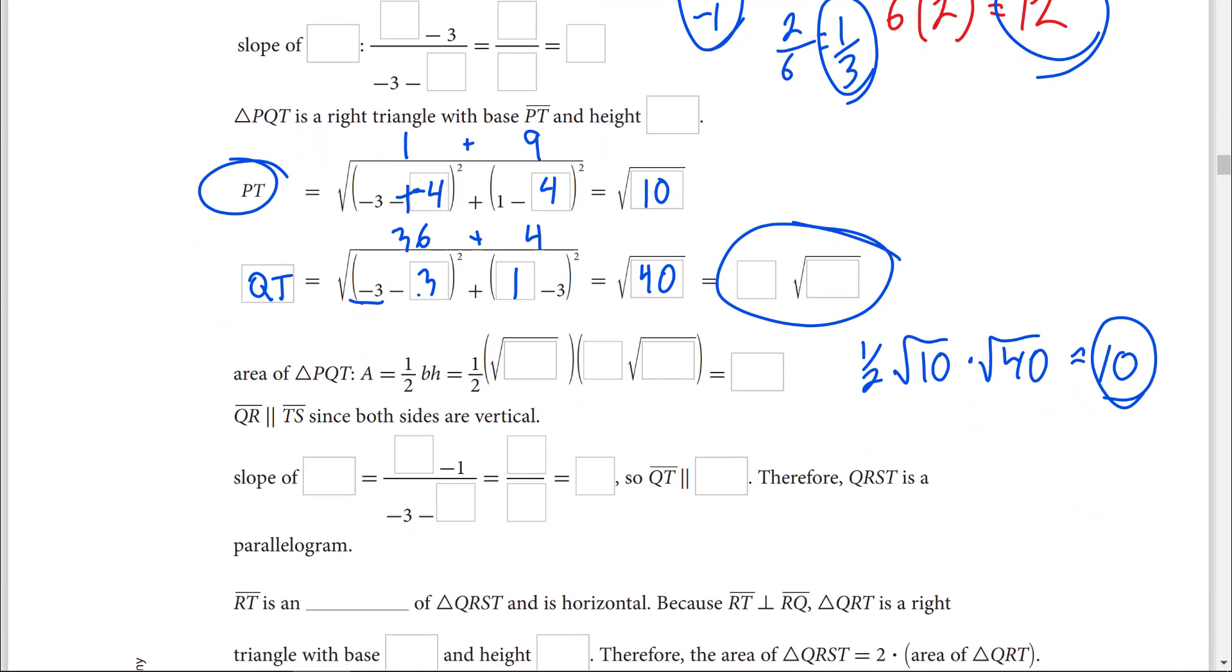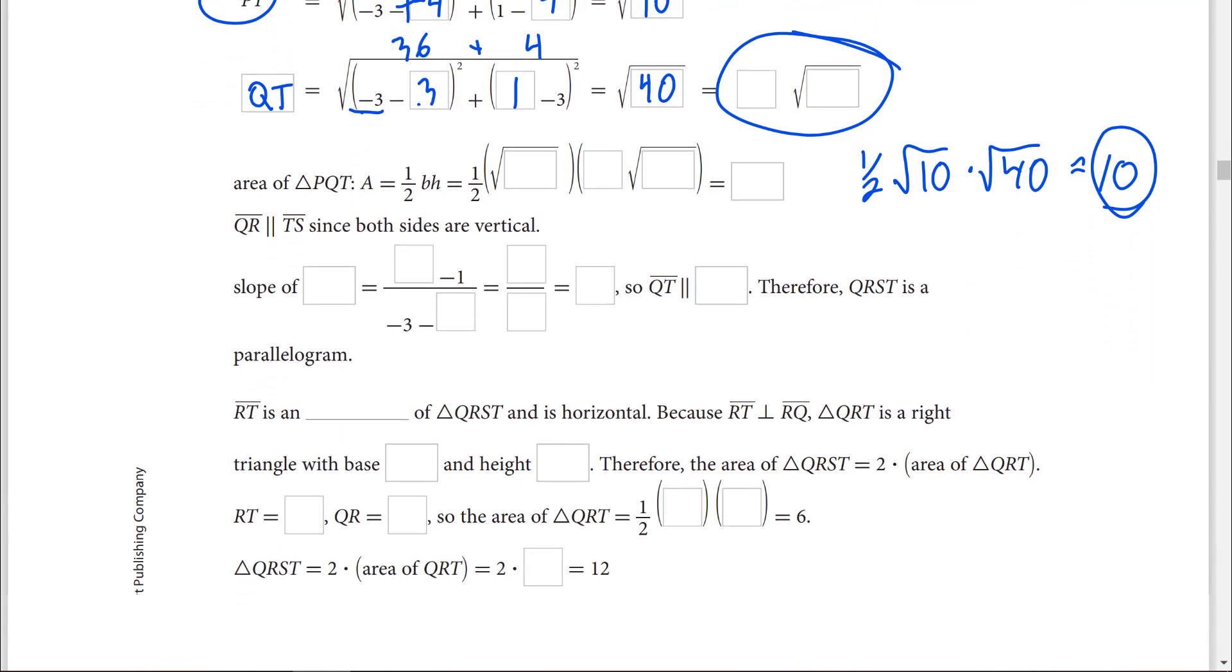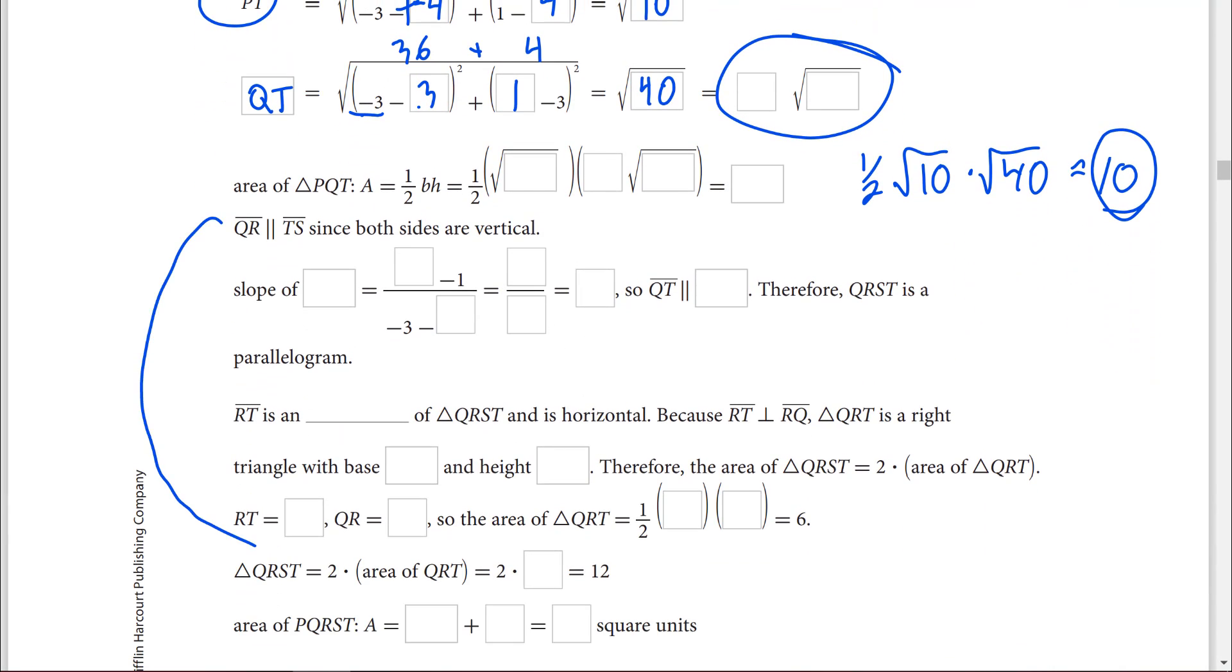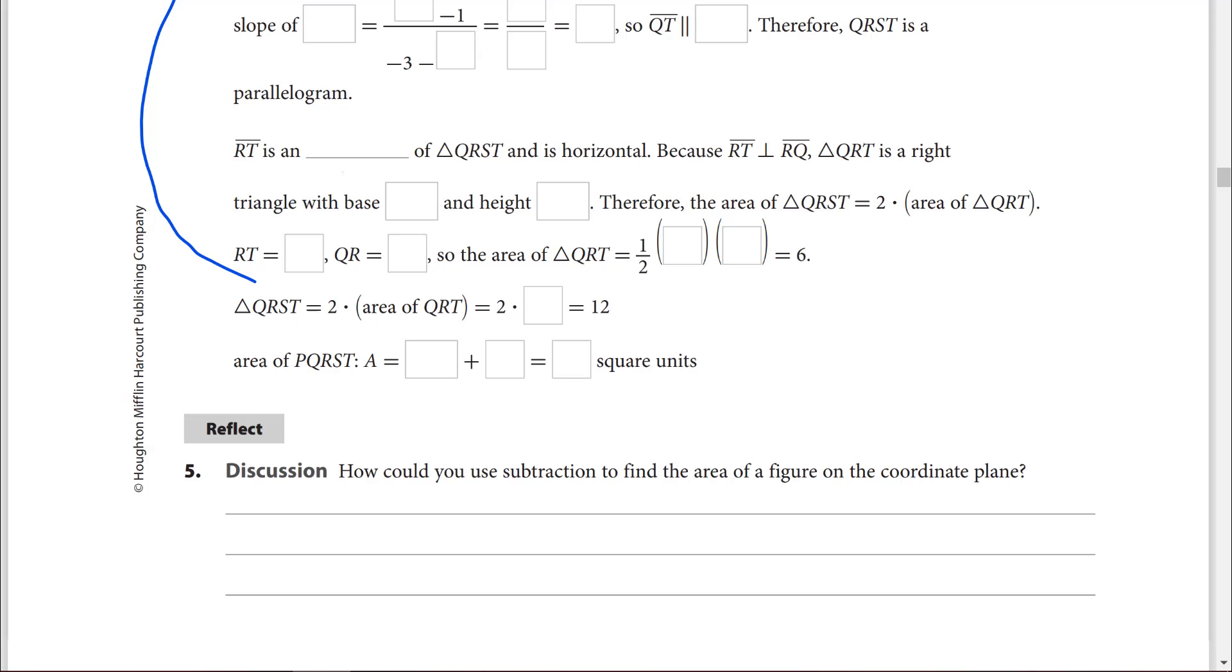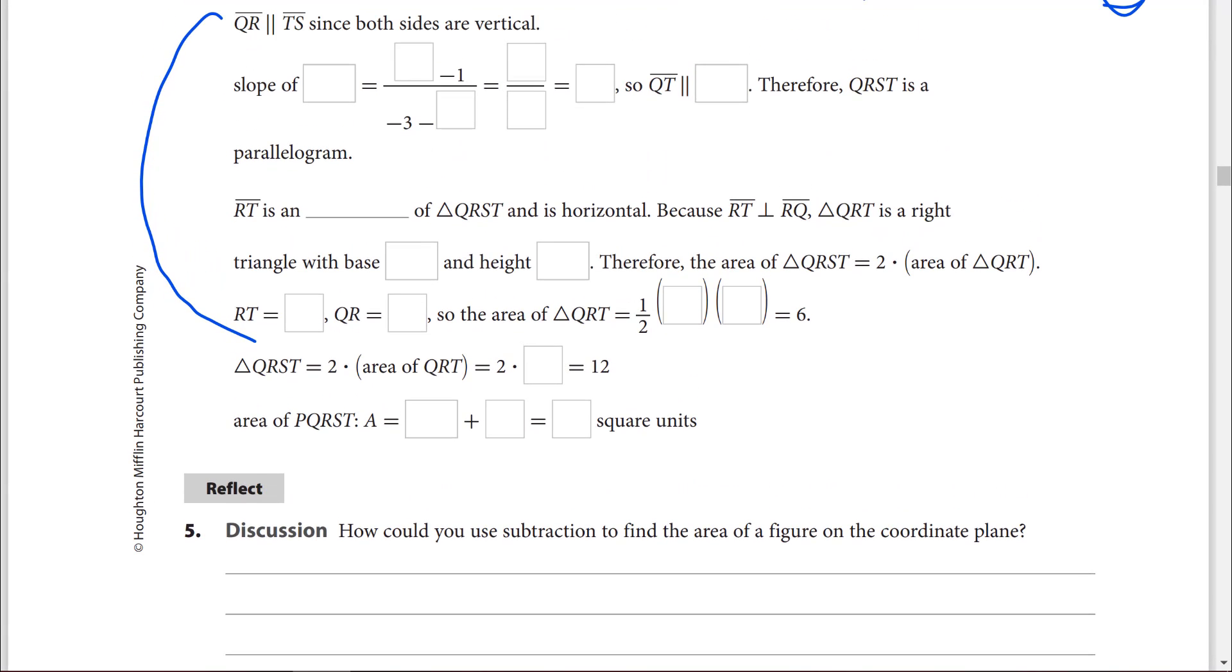Add them together, we did the parallelogram work already. So we are looking at 10 plus 12 for a total of 22 square units or, in my shorthand, 22 units squared. Either way is correct. And that is it for today. Have a good one.